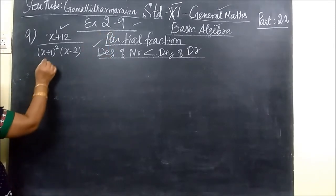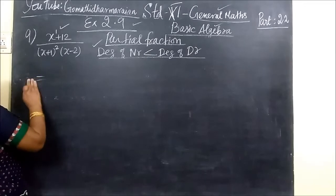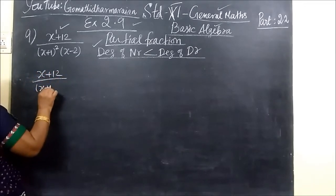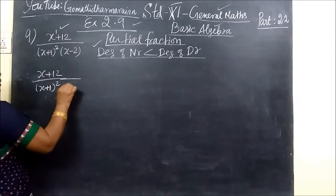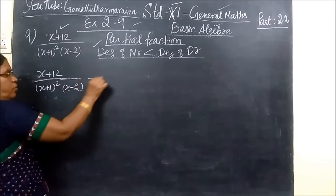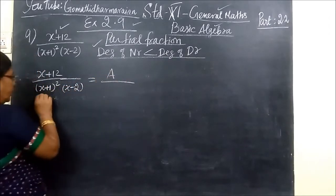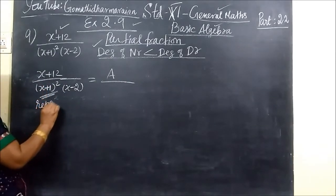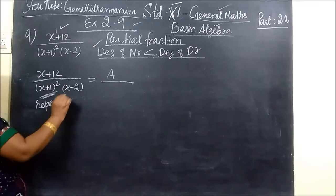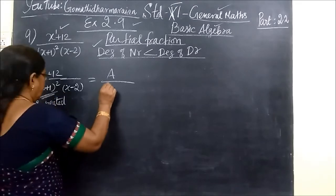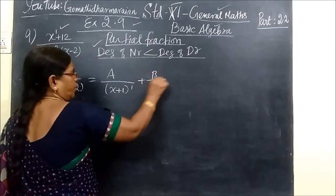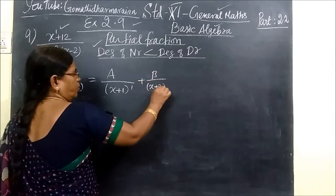Now you write this x plus 12 by x plus 1 whole square, x minus 2. So this can be written as, here x plus 1 whole square means repeated roots. If roots are repeated, a by x plus 1 power 1 plus b by x plus 1 power 2.